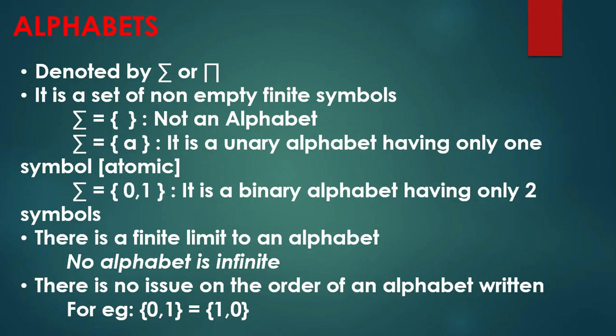First terminology is alphabets. It is a set of non-empty finite symbols. For example, sigma is equal to null — this is an alphabet. Sigma equal to one particular symbol is a unary alphabet having only one symbol. Sigma equal to {0,1} means it is a binary alphabet having only two symbols. There is always a finite limit to an alphabet — no alphabet is infinite.